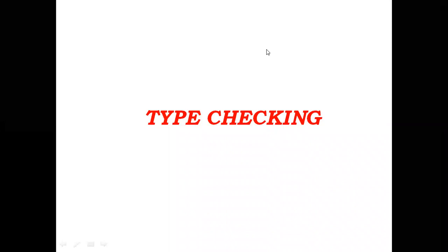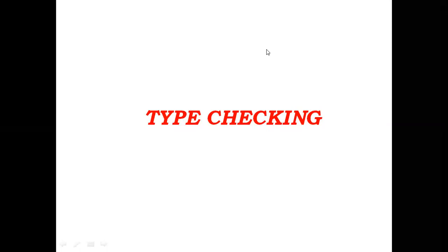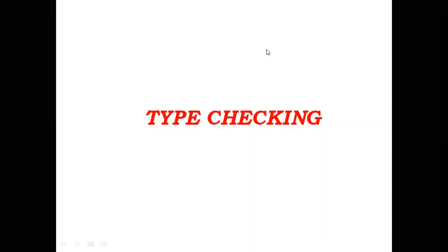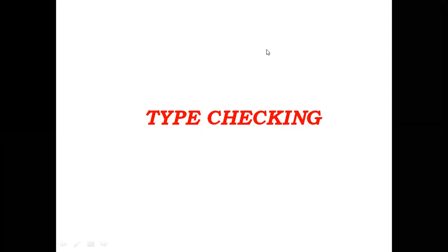Whenever we use some construct or concept in the program, the data types must match that concept. For example, if you want to enter the name of a student in C language, the variable receiving that name must be an array of characters — like name[10] or name[20]. In Java, the data type must be string. That is our expectation.